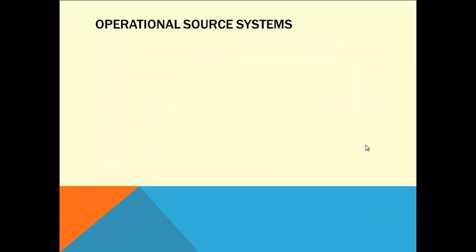In the next slide, we will do a deep dive about each of them. Operational source systems — this is the first area for my data warehouse. These are the operational systems of record that capture the transactions of the business. First, understand what is an operational system. An operational system in technical terms is called an online transaction processing system.